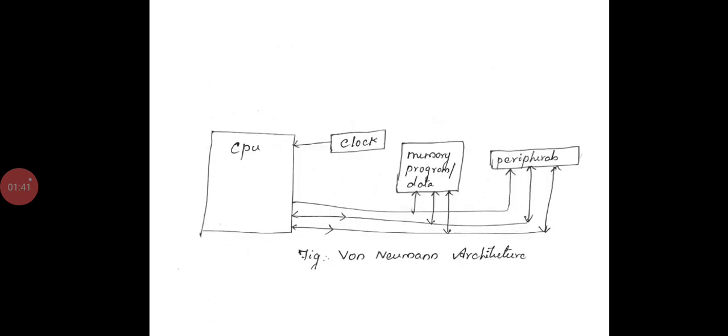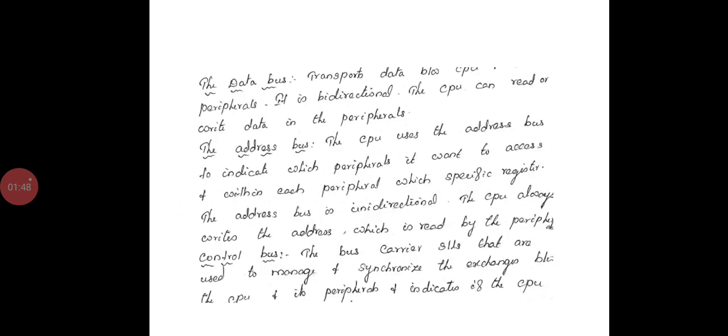This is the Von Neumann architecture block diagram. It consists of CPU, clock, memory, program data and the peripherals. While we are going for the buses, the first one is data bus.